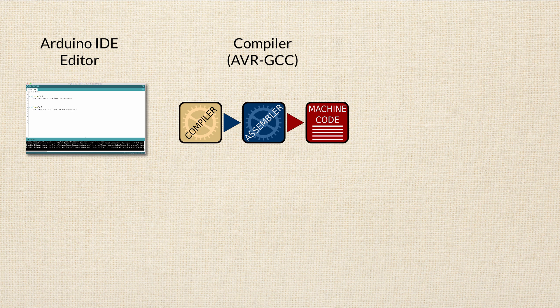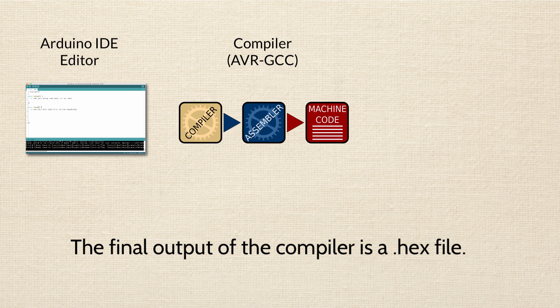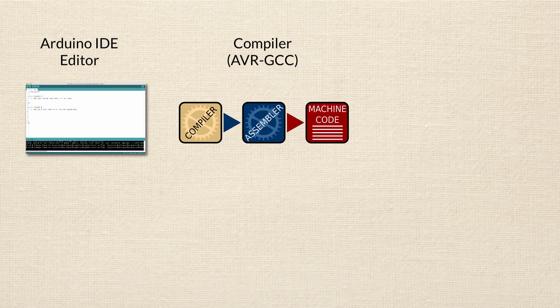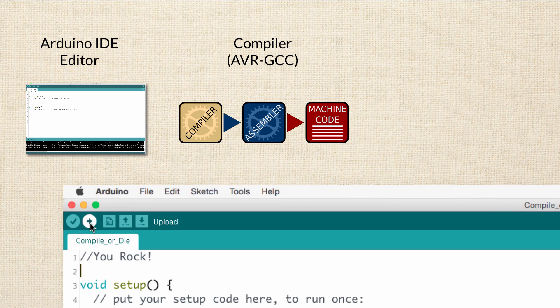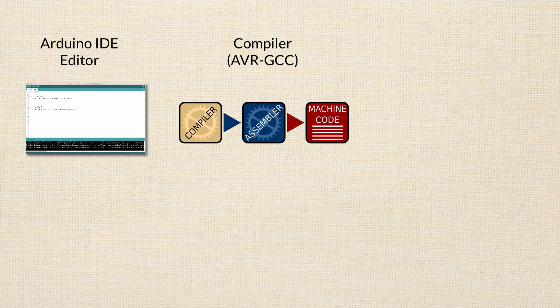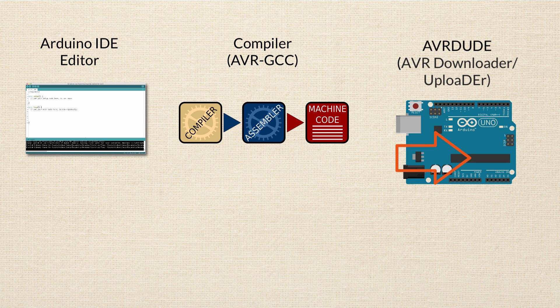What the compiler also does is take the code and translate it into machine code. There are some in-between file types, but the final output of the compiler is a machine language file saved as a .hex file. In order to get this .hex file actually loaded onto the Arduino's integrated circuit, we need to press the Upload button. What the Upload button does is start another piece of software called AVRDUDE — as in, hey dude.